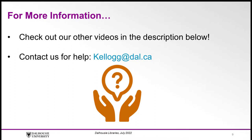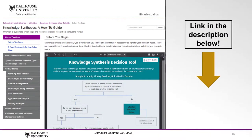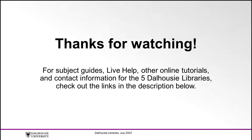If you would like more information on using the Cochrane Library, feel free to check out the video in the description below, along with our other videos on translating searches to CINAHL and EMBASE. You can also contact us for assistance with your literature searching by email at kellogg.dal.ca. Finally, Dalhousie Libraries has a helpful subject guide where you will find lots of helpful information and tools to help you with your knowledge synthesis projects, including how to properly document your search results, manage your references, and resources for other steps of the review process. You can find a link to this guide in the description below. For more information on the Dalhousie Libraries, check out the links in the description below.